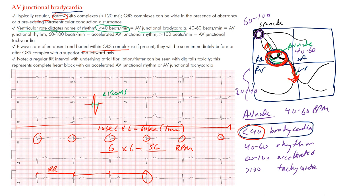Our focus here is AV junctional bradycardia. Notice where it starts — in the AV junctional region — and it's based on the rate: less than 40 beats per minute. It's a regular narrow QRS complex unless there's underlying aberrancy or intraventricular conduction delay. The rate is less than 40 bpm, and the P waves may be absent or buried within the QRS complex. So that is AV junctional bradycardia.